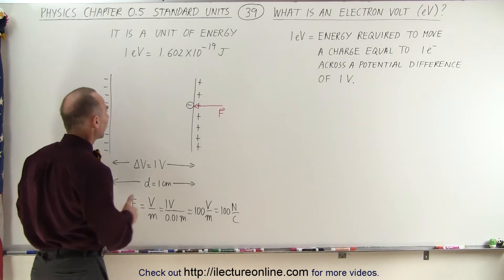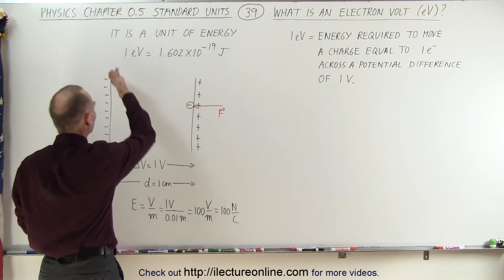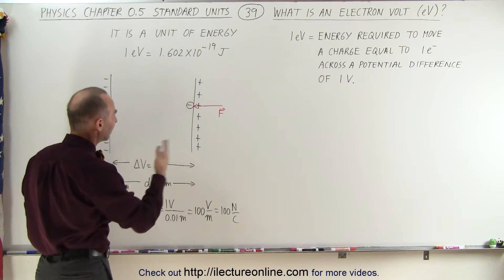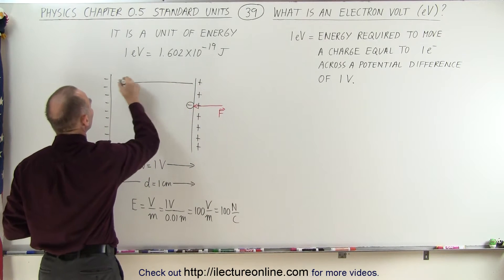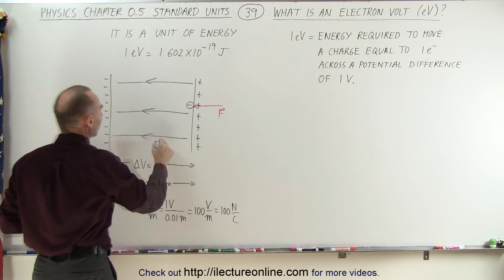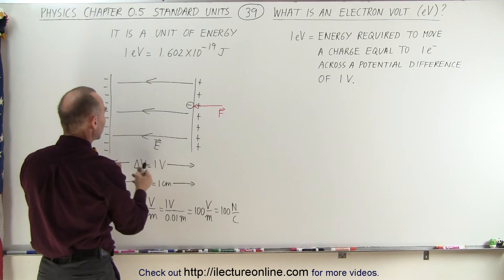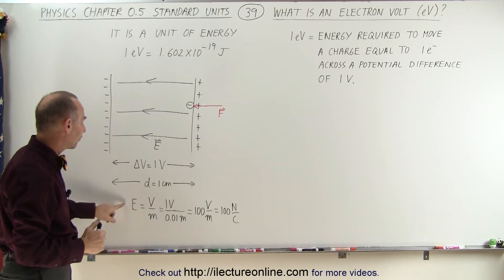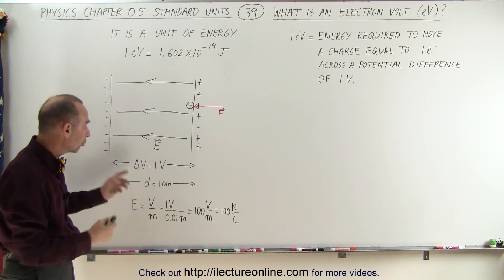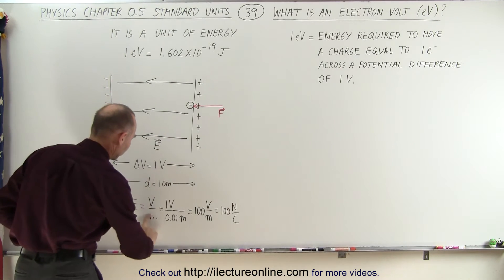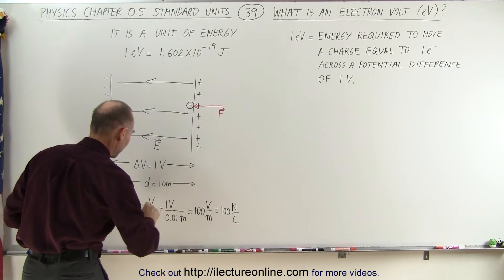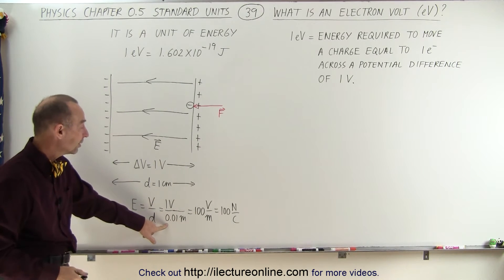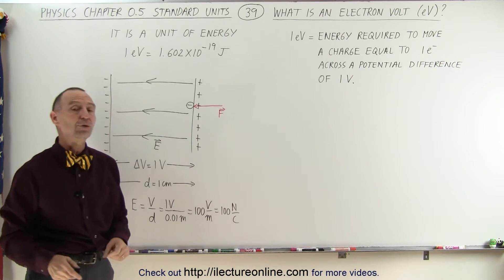Here we have an illustration of that. Let's say we have a capacitor where we have charges on one side and opposite charges on the other side, so that there's an electric field between the two. The electric field will emanate from the positive charge to the negative charge. Let's say there's a potential difference between the plates equal to 1 volt, and the distance between the plates is equal to 1 centimeter. The electric field strength can be defined as the voltage divided by the distance: 1 volt divided by 0.01 meter gives us 100 volts per meter, or 100 newtons per coulomb — those are the units for the electric field.